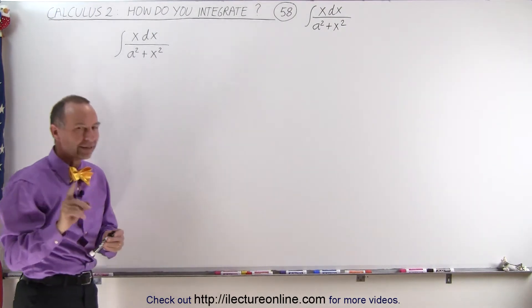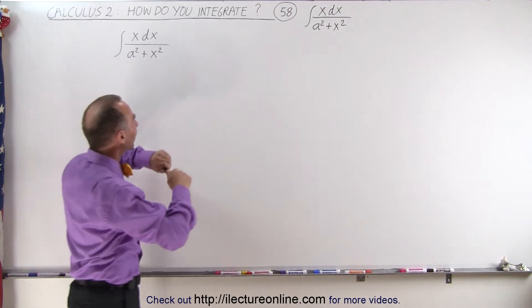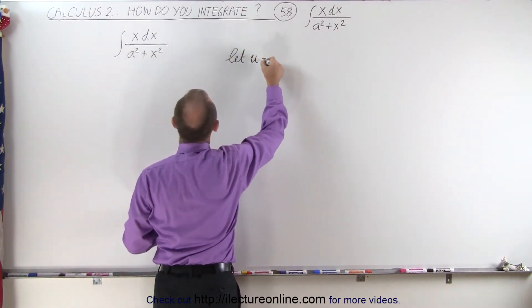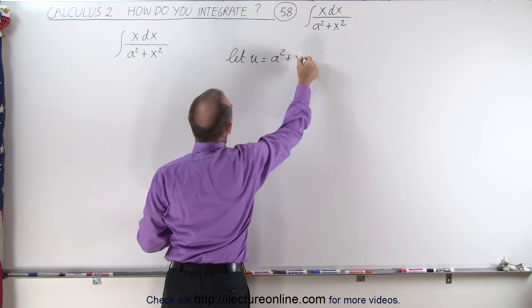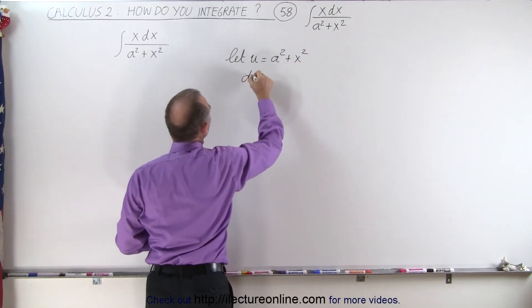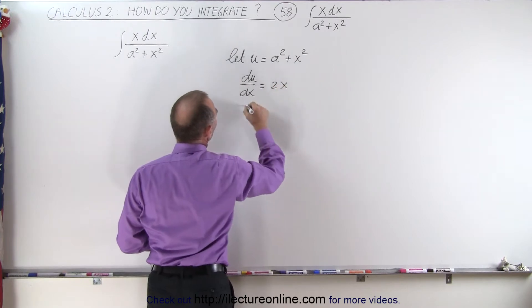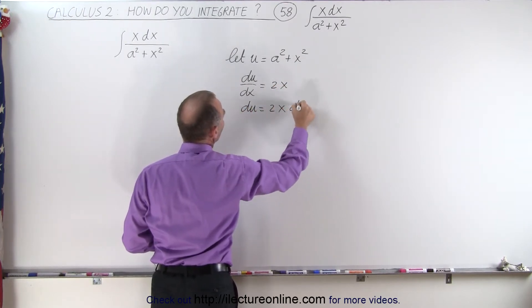Well, not quite an x dx, and we'll see in just a moment why. We're going to let the denominator equal u. So let u equal a squared plus x squared, then du dx will be equal to 2x, and so du will be 2x dx,